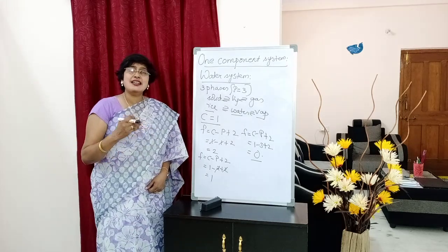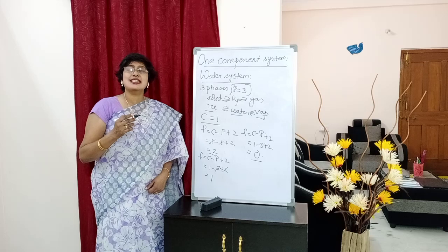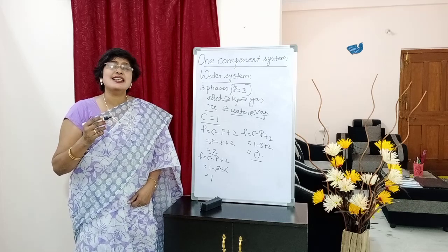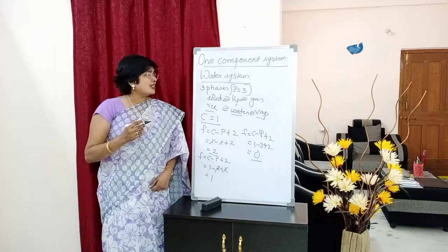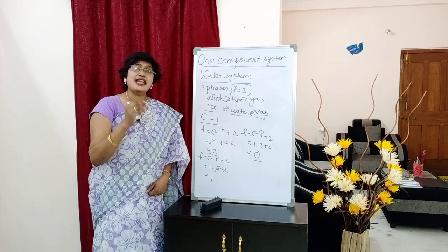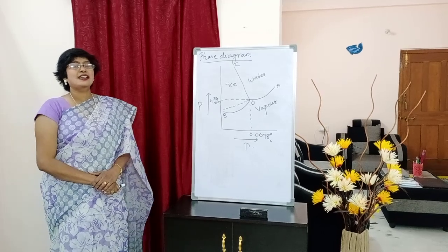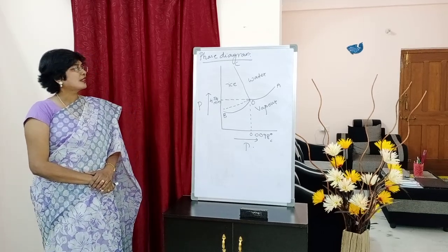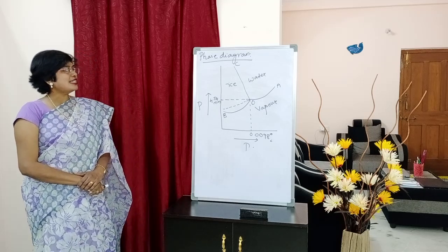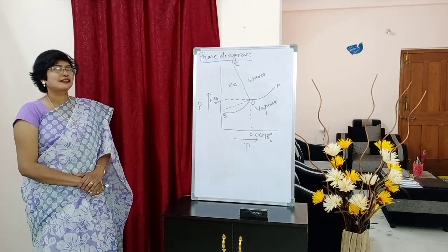The maximum number of degrees of freedom in the water system is 2. Hence, the water system can be represented by a phase diagram taking two variables, that is temperature and pressure. On the x-axis, temperature is taken; on the y-axis, pressure is taken.